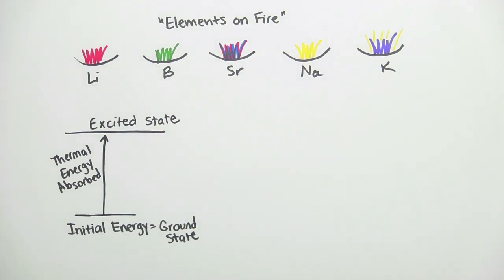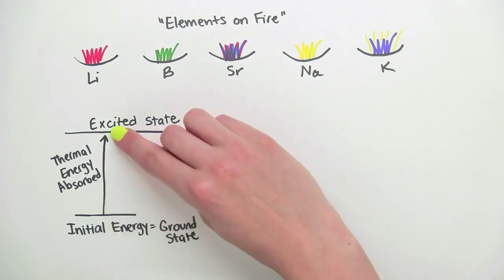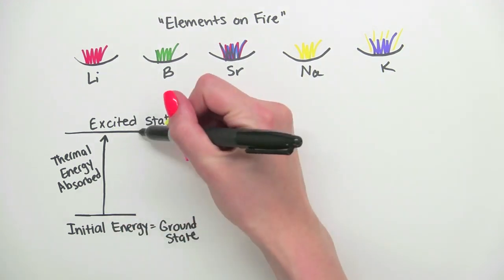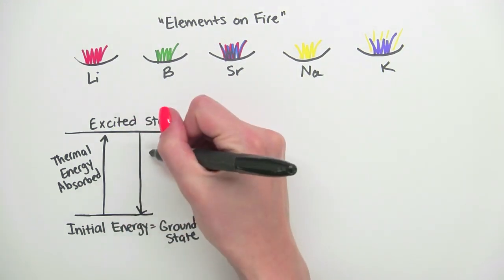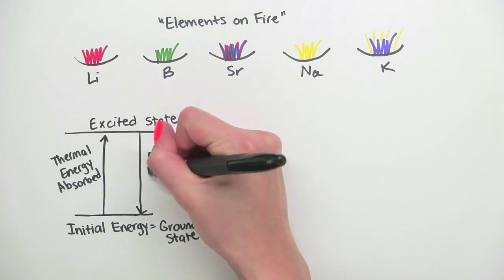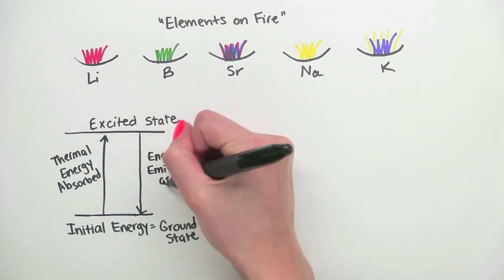Since energy cannot be created or destroyed, any energy that was absorbed by the atom must be emitted again as the electron returns to the ground state. This energy is emitted as light.